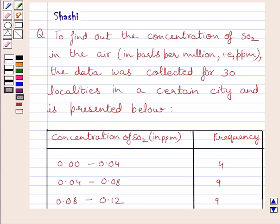Hi and welcome to the session. Let us discuss the following question. Question says, to find out the concentration of sulfur dioxide in the air, the data was collected for 30 localities in a certain city and is presented below.